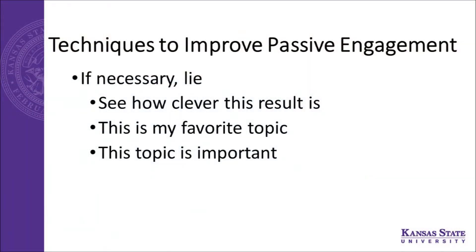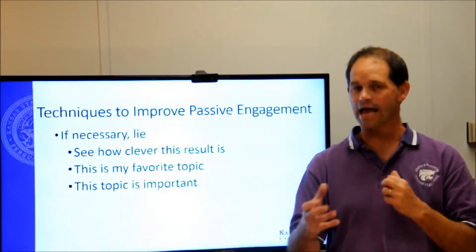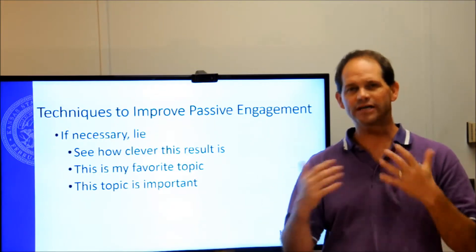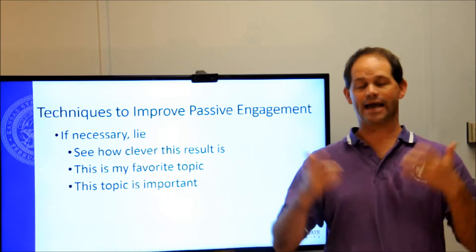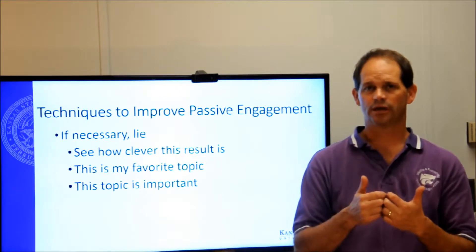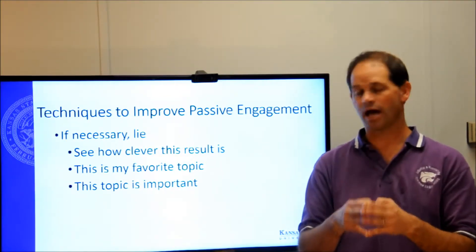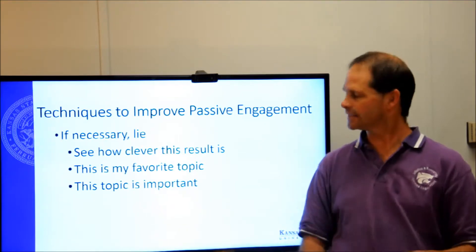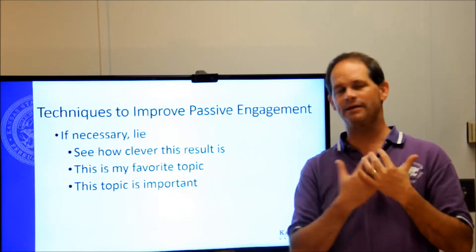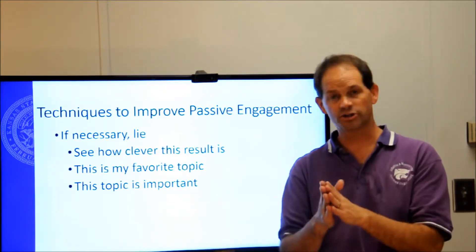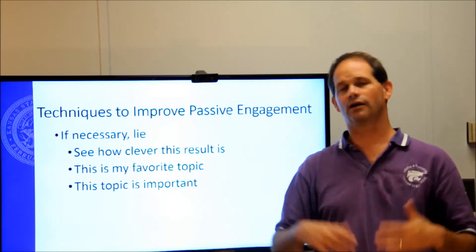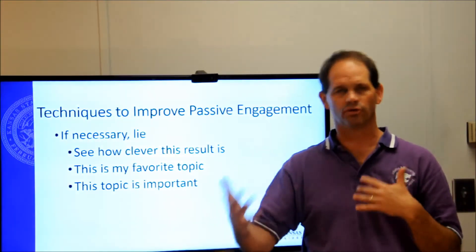One of the most important techniques to improve passive engagement is literally lying or omitting the truth. Sometimes you get stuck teaching a class you really don't like, have no interest in, and are not excited about. Coming out and saying 'I hate this class' at the start basically dooms every student not to pay attention. So in some sense you need lying — even in a class like that, saying 'this is my favorite topic' every once in a while.